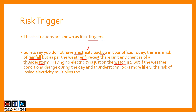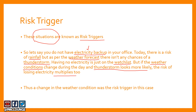But later in the day, if you realize that the weather conditions have changed and now a thunderstorm looks more likely, this is a risk trigger. The risk of losing electricity has now multiplied because the risk trigger was that the weather conditions — the situations — changed during the day as it was raining heavily. So a change in weather conditions was the risk trigger in this case. I hope you were able to understand risk triggers and this example.